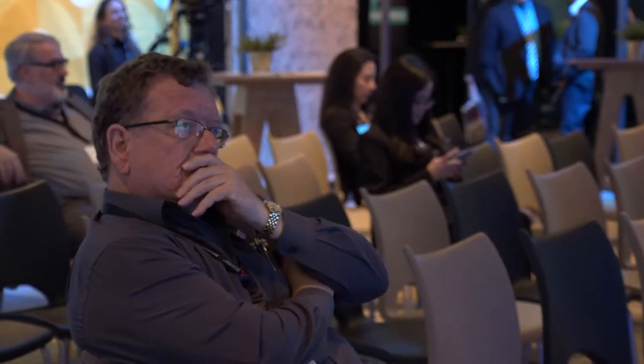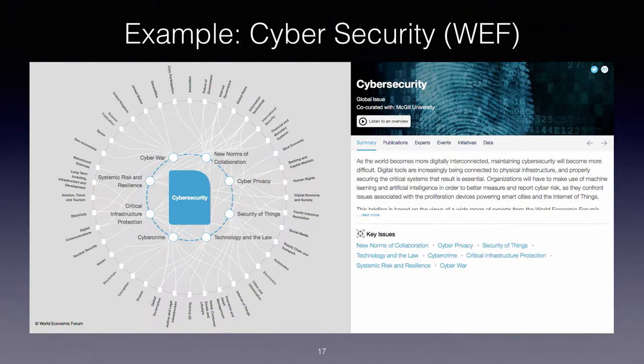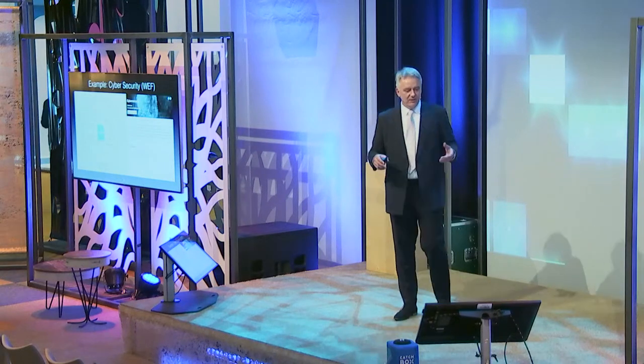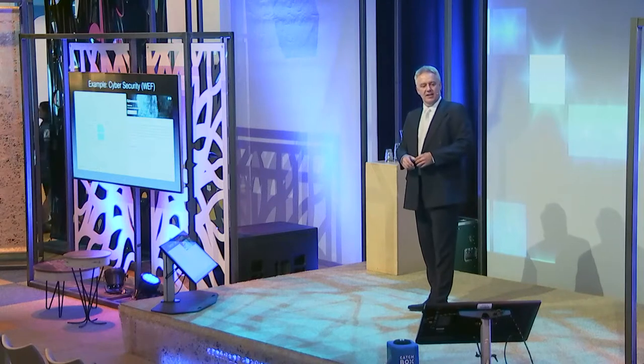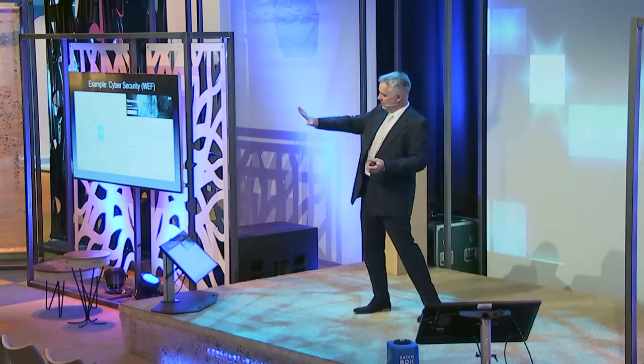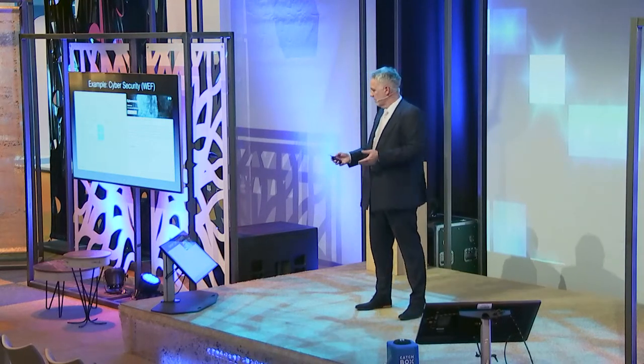For instance, everyone is talking about cyber security — 'I think I need to do something about cyber security' — but they don't know whether it affects their business process. If you want to know the circumstances in which cyber security has influence, you can easily pick out the relationships from these kinds of models. You can also see not only a summarization but the key issues involved, the publications, the experts, the events, the initiatives, and the data. I really invite you to log in — it's dynamic, because all the blue lines appear when you pinpoint one of those disruptions.